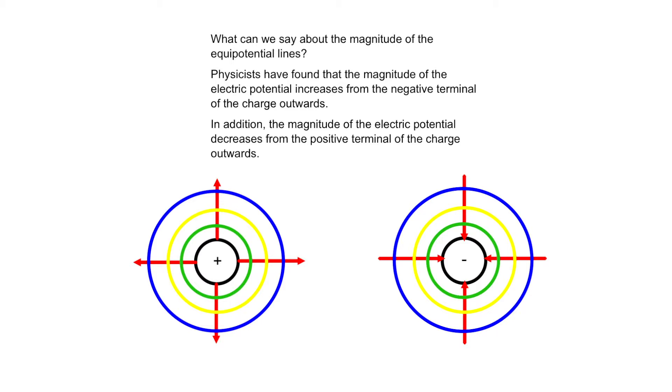Physicists have also found the opposite appears for positive charges. Therefore, the green line has a greater potential than the yellow line, and the yellow line has a greater potential than the blue line.